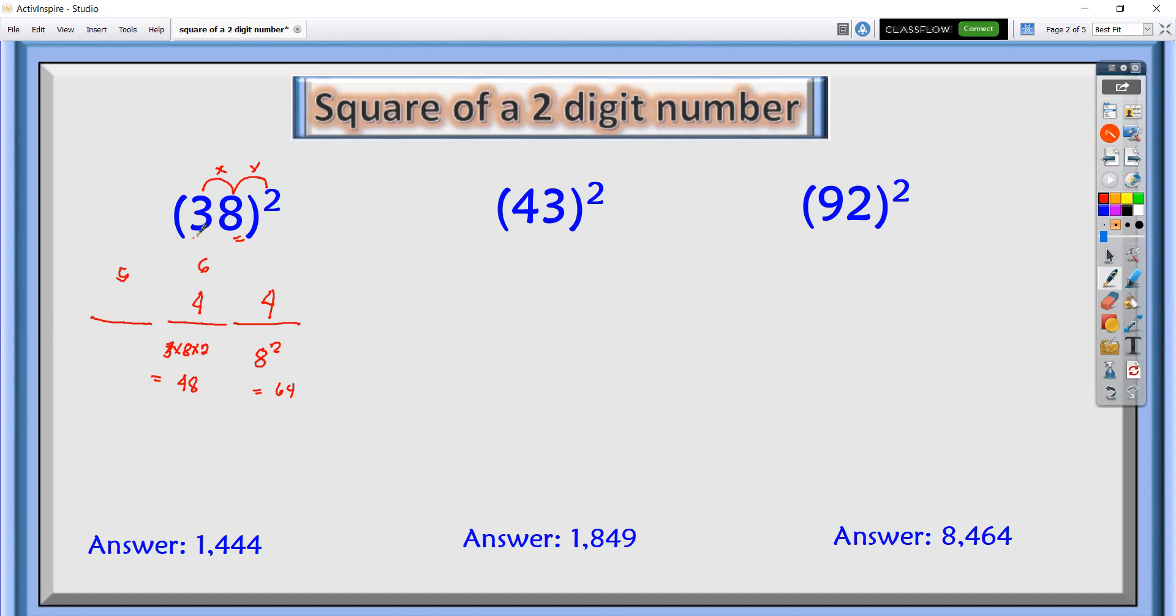And next we will square the first number and that is 9. 9 plus 5, we have 14. Therefore, the square of 38 is 1,444 and we got the same answer here.